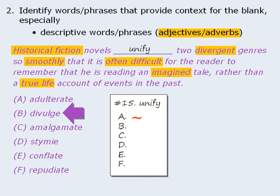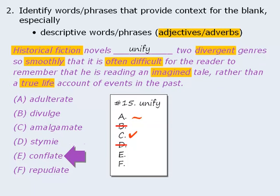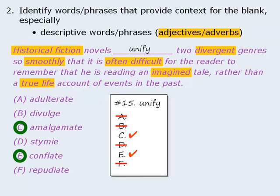Next, 'divulge' means to reveal — not a good fit, so eliminate B. Next is 'amalgamate,' which means to unite — an excellent fit for our prediction, so we'll keep it. Next is 'stymie,' which means to confuse — not a good fit, so eliminate D. Answer choice E, 'conflate,' is also a synonym for unify, so we'll keep it. And 'repudiate' means to renounce or deny — does not fit, so eliminate it. We now have three answer choices remaining. Since 'adulterate' has a connotation of making things impure, it's not as well supported as C and E, and there's no other word with the same connotation to pair it with. So we eliminate A, leaving us with C and E — the correct answers. We should also notice that C and E create sentences with the same meaning.